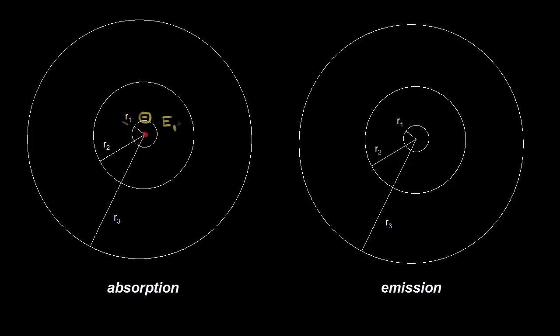We saw in the previous video that if you apply the right amount of energy, you can promote that electron — it can jump up to a higher energy level. If we add the right amount of energy, this electron jumps up to a higher energy level, now at a distance of r3. So we're talking about the third energy level. This is the process of absorption: the electron absorbs energy and jumps up to a higher energy level.